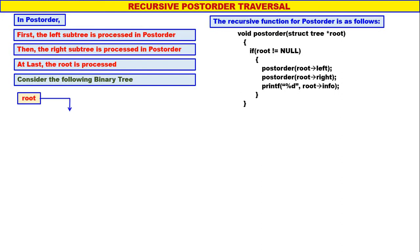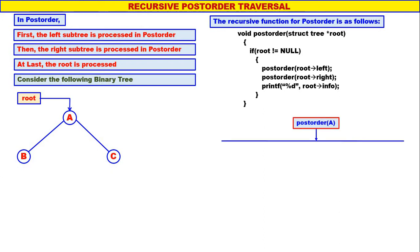Consider the following binary tree. A is the root of the tree, so we will call post_order(A). Left child of A is B, therefore we will call post_order(B). Right child of A is C, therefore we will call post_order(C). Then display A.